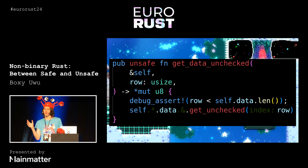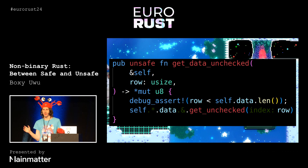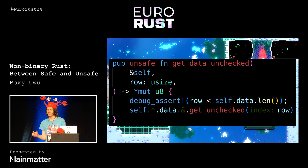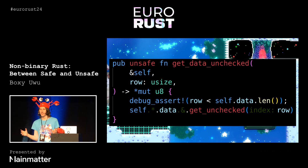Maybe that's not entirely true — maybe we could be using trait objects. It's important that when you're thinking about why you're using the unsafe code, you make sure that you've fully thought everything out, and don't just stop at the very first thing that looks like it kind of explains things.